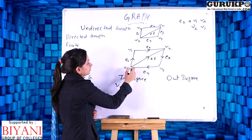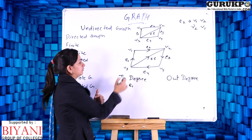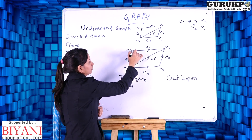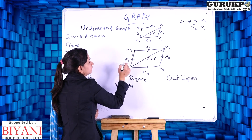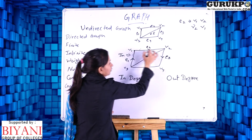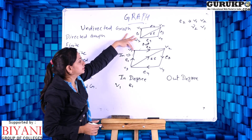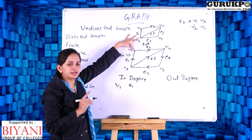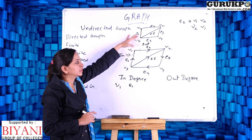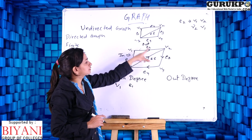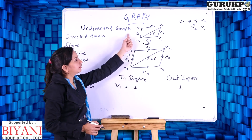Let's understand with an example. For vertex V1, edge E1 is coming toward V1, so it is counted in the in-degree. Edge E2 is going outside from V1, so it is the out-degree. In other words, if V1 is the starting vertex of an edge, that counts as out-degree; if V1 is the ending vertex of an edge, that counts as in-degree. So V1 has one in-degree and one out-degree. In undirected graph V1 had two degrees, but in directed graph V1 has one in-degree and one out-degree.